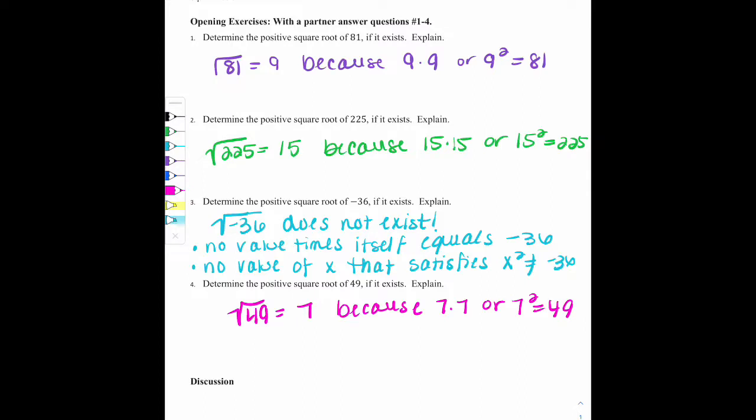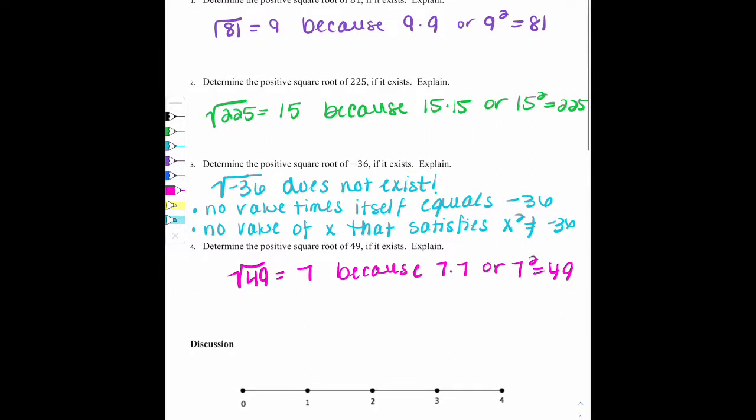So going back to revisit square roots, to make sure you're comfortable with that concept, I also want to talk about how it applies on a number line. A lot of times with these types of numbers, you are asked to locate their location on a number line. And I want you to think about a different way to look at it. If we were trying to place these numbers, we could get out the calculator, find out their decimal approximations.